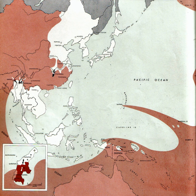On the 12th, the second Quebec Conference, codename Octagon, begins. Roosevelt and Churchill discuss military cooperation in the Pacific and the future of Germany.